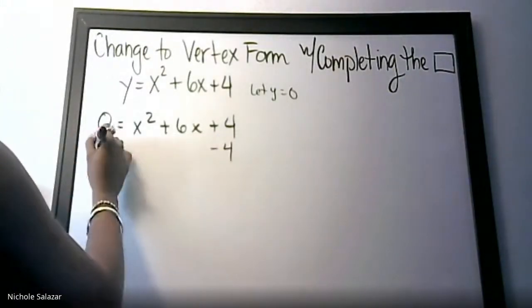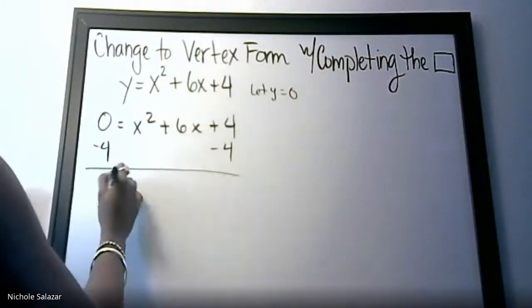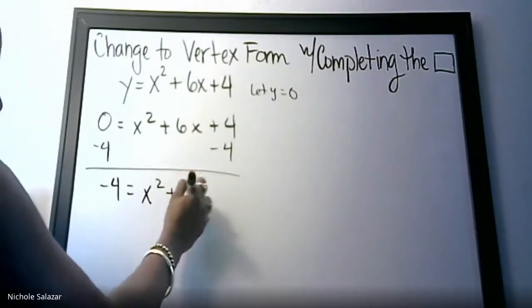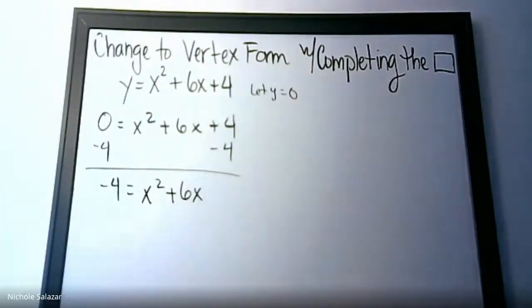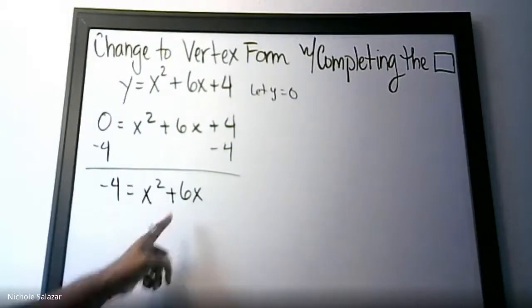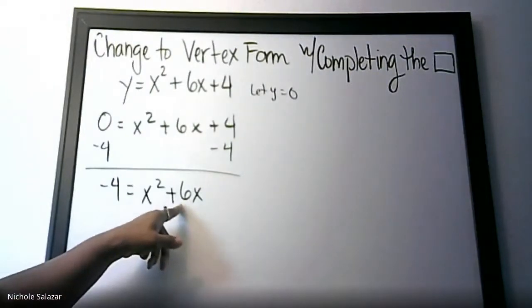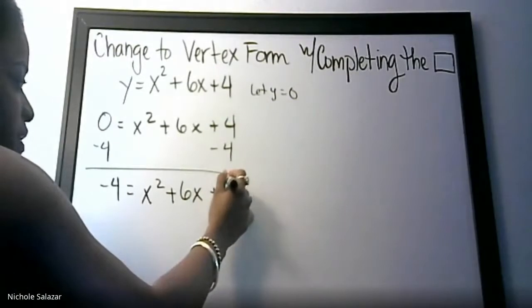Now we have negative 4 equals x squared plus 6x, and now here comes the completing the square part. We take this middle term or B term, cut it in half and square it.